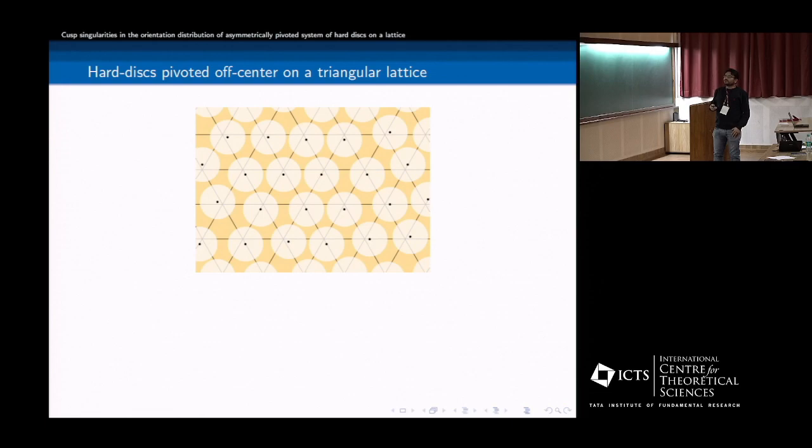So this is the new result that I am going to show. So we have looked into, for example, this hard disk pivoted off center. So pivots are identical on each disk and it's off center. And now it can rotate, it can rotate, provided that there is no overlap.